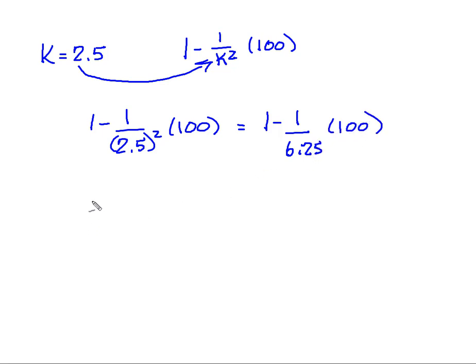And so I know now that that's 1 minus 0.16 times 100, which is going to give me 0.84 times 100, is going to give me 84 percent.